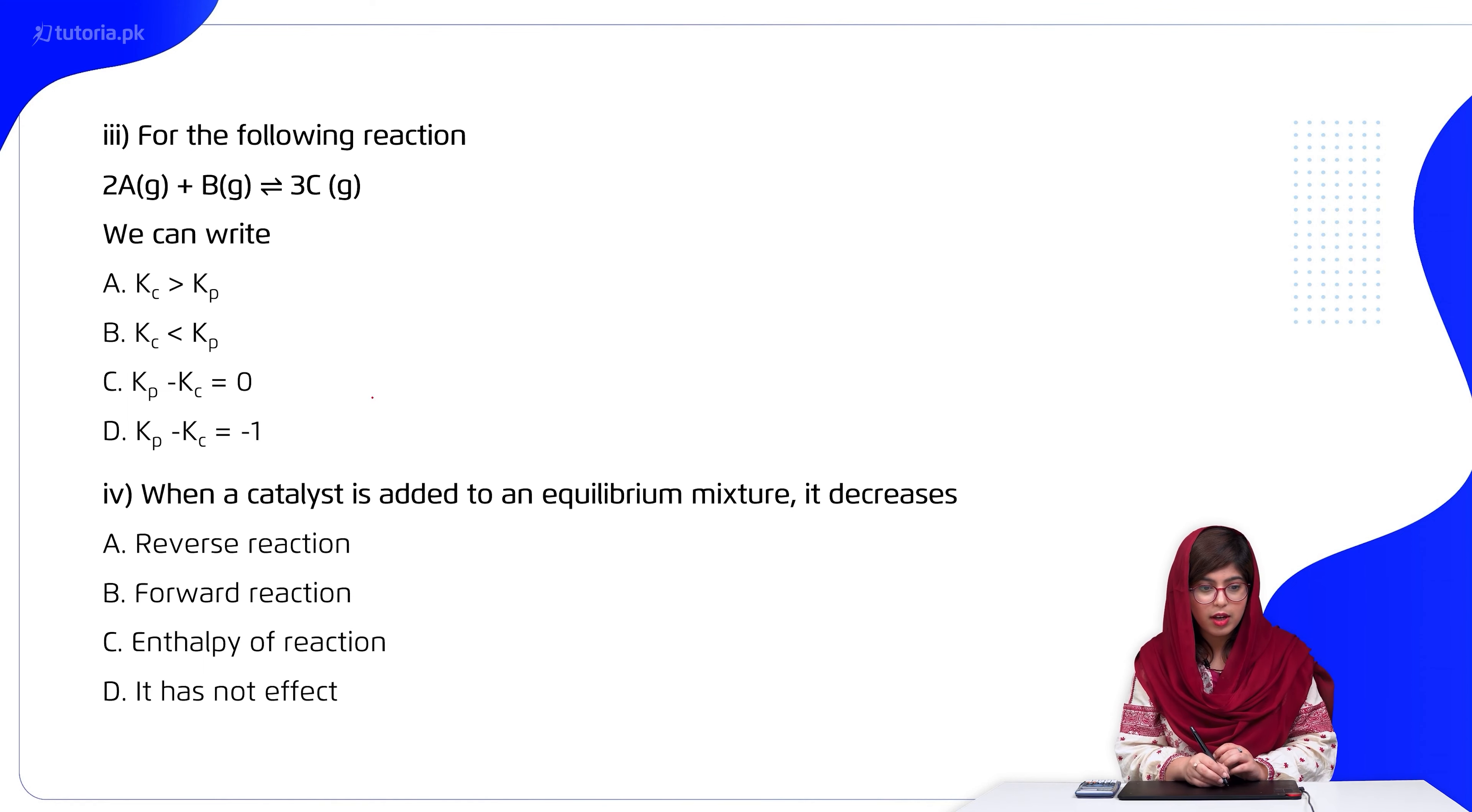So students, here we need to find the delta n value, which is products minus reactants: 3 minus (2 plus 1), which gives us 3 minus 3 equals zero. So it will be equal to C.